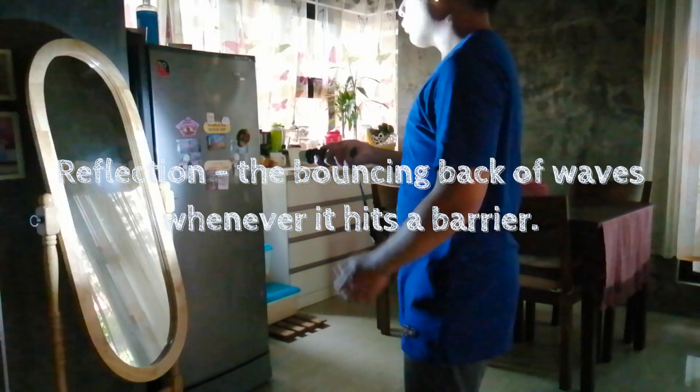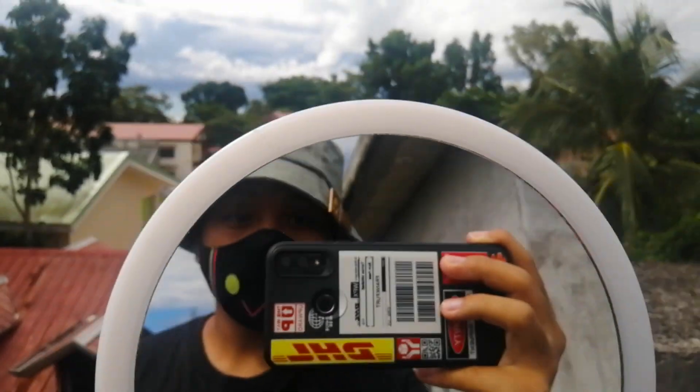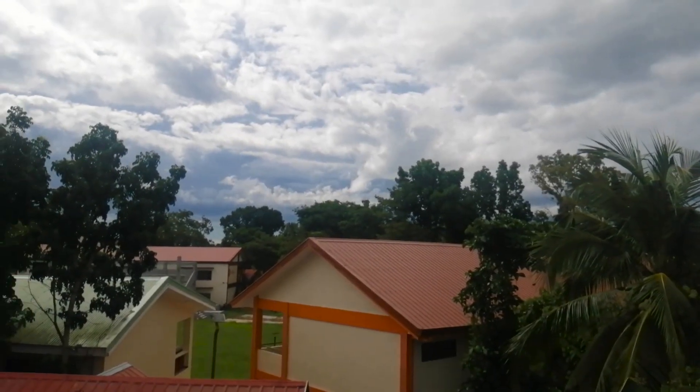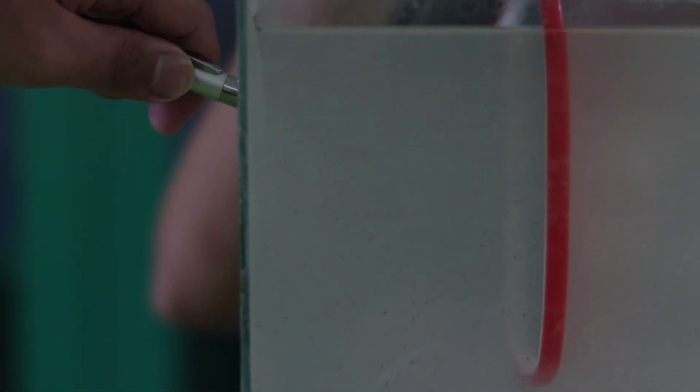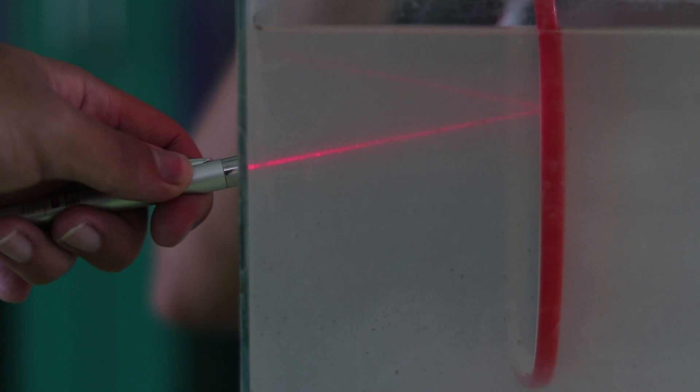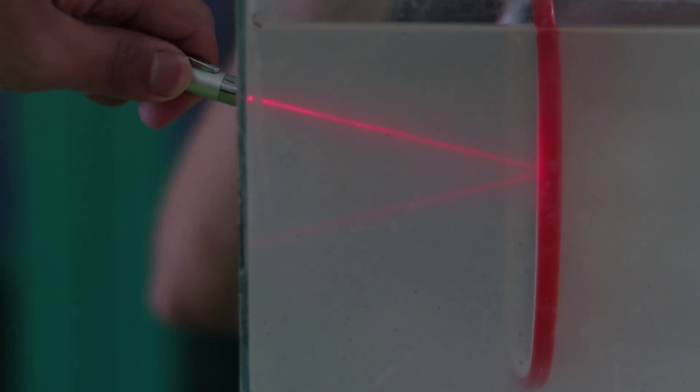We can say light is a wave if it behaves like a wave. First, does it reflect? Yes! Our images in the mirror and the colors that we see are all possible due to the reflection of light. The laser here shows how light is reflected as it hits the mirror.